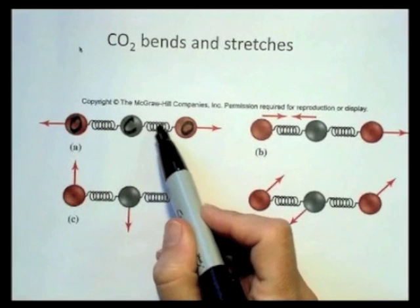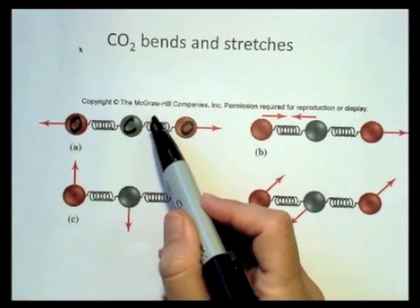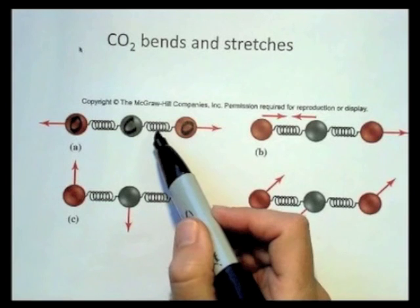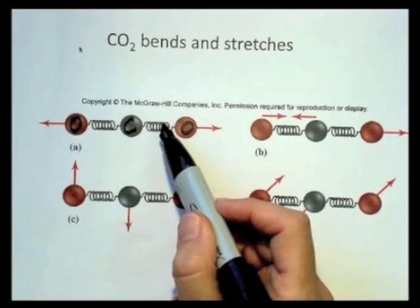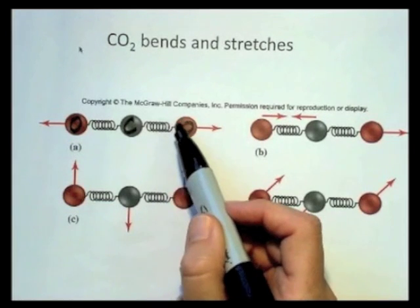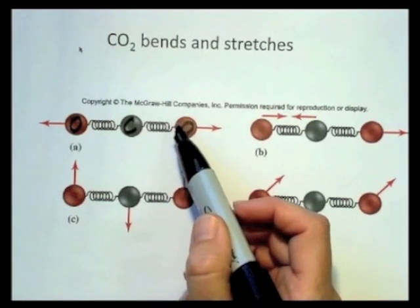And rather than modeling the bonds as a pair of electrons, or in this case two pairs of electrons, or as little dashes, in this case we're modeling the bonds as springs.